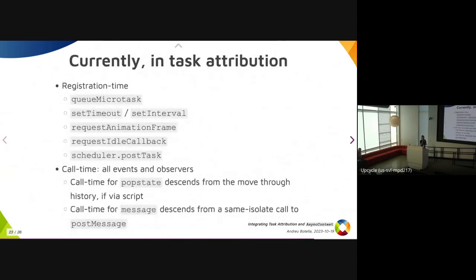For message events — when you call postMessage on a window, worker, or MessagePort — if the message comes from the same isolate, the call-time descends from the context at the time of the call to postMessage. This is because many userland JavaScript libraries use postMessage as a way to schedule things, back when there was no scheduler.postTask.